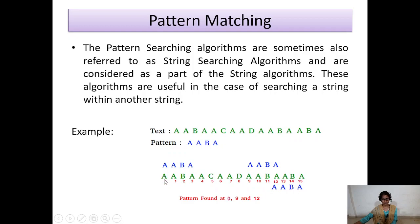Before identifying matches, we assign index positions to the text: 0, 1, 2, 3, and so on. Our pattern is A A B. We start matching at position 0: A matches A, then A matches A, then B matches B, then A matches A — so a match is found at position 0. Similarly, checking further, the next match is found at position 9: A A B A. Another match is found at position 12: A A B A.